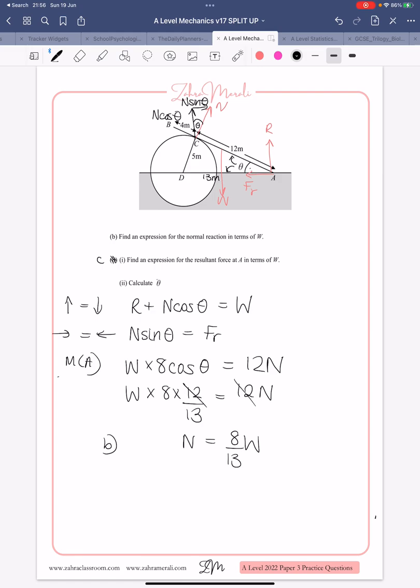So, what we're going to do is take all this information we have and substitute things in. So, we want an expression for R. So, R is going to equal W minus N cos theta, but we know N is 8 over 13W, and we know that cos theta is 12 over 13. So, we've got 1W minus 8 over 13 times 12 over 13, which gives us 73W over 169.